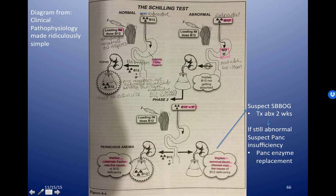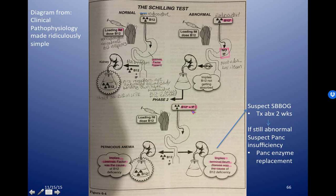However, in a patient who lacks intrinsic factor, when you give the radiolabeled vitamin B12, it never gets absorbed into the terminal ileum and you end up with urine that does not have radiolabeled vitamin B12 in it — so you know there's a problem with absorption. The next step is to determine why there is no intrinsic factor. In the second phase of the test, you give the radiolabeled vitamin B12 with intrinsic factor to see if it is just the presence of intrinsic factor that's needed. If the production of intrinsic factor was the problem, then adding it should allow vitamin B12 to now be absorbed and appear in the urine.